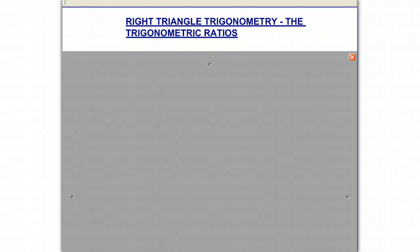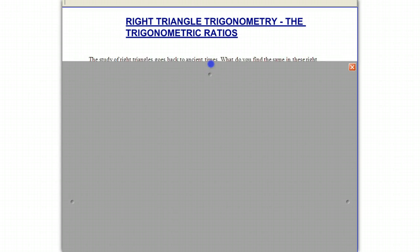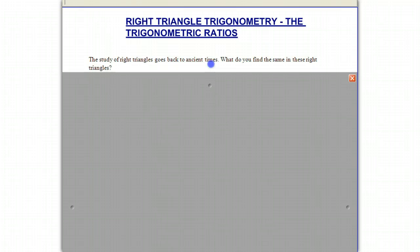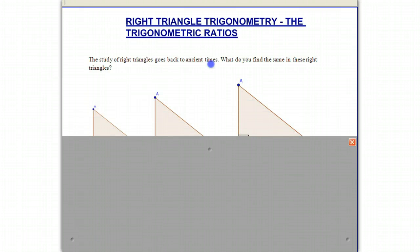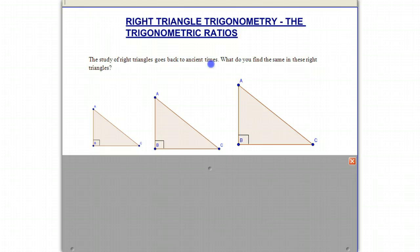Today we're going to study the trigonometric ratios. The study of trigonometry goes way back to the second millennium B.C. when the Egyptians started studying it. They noticed something.